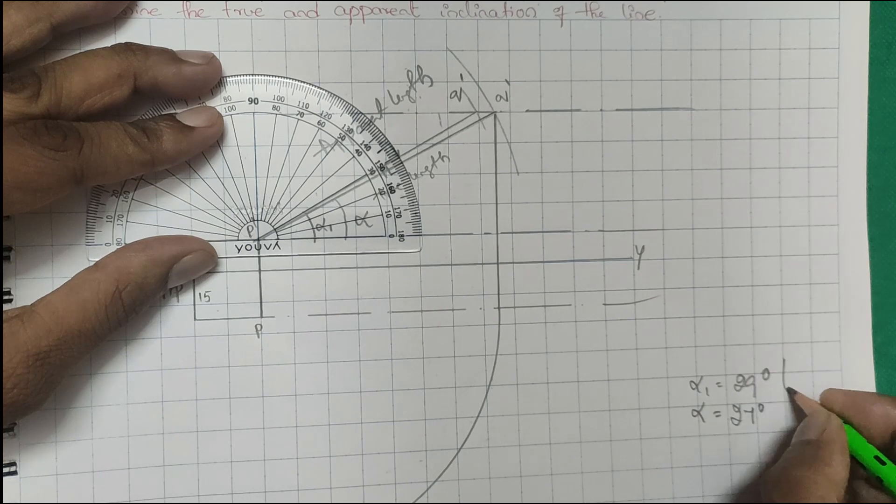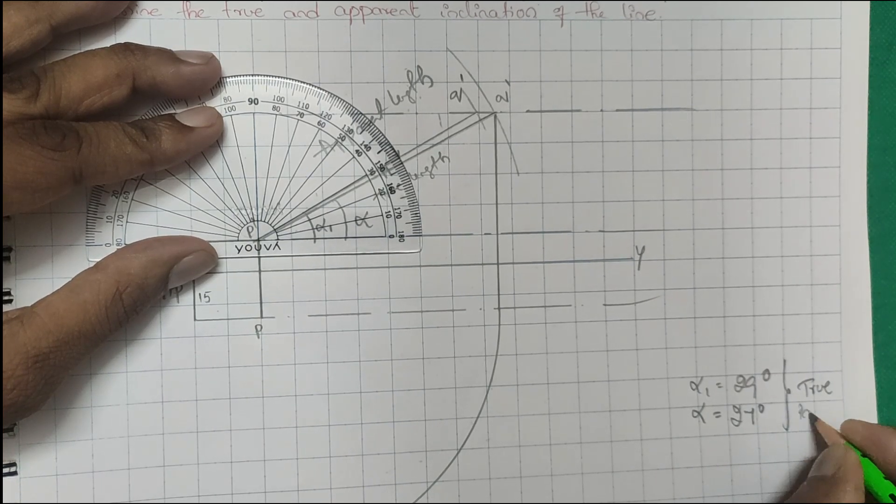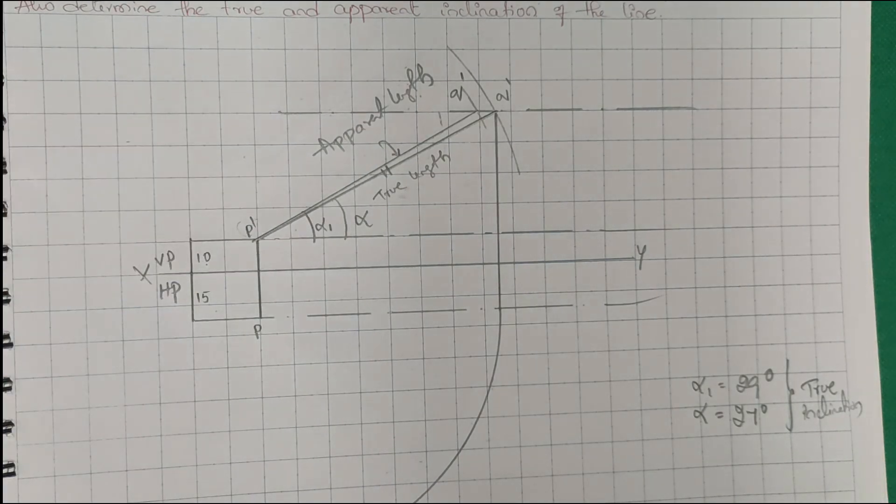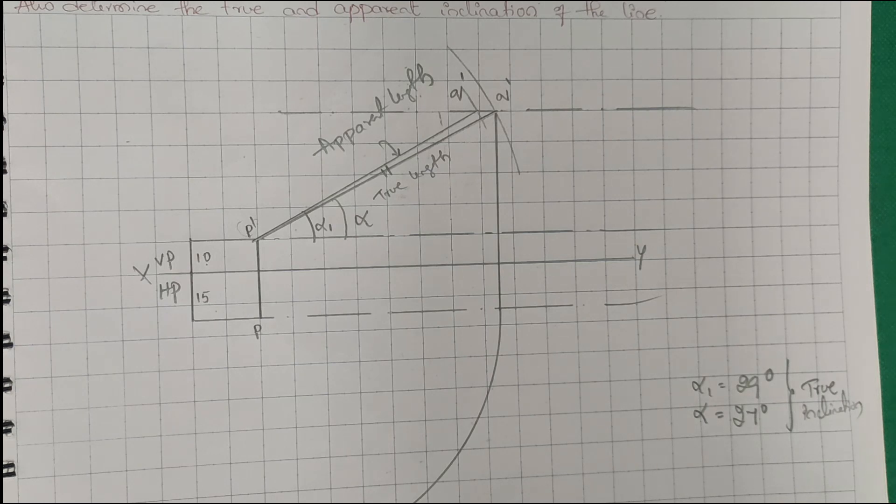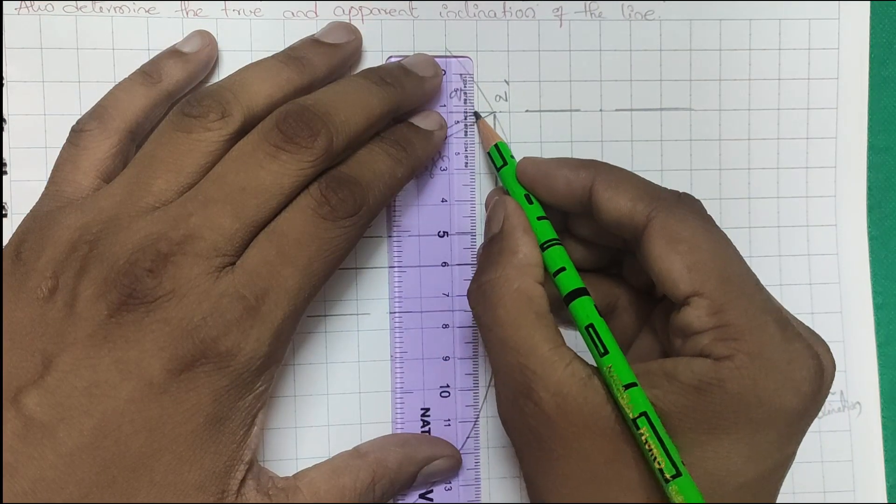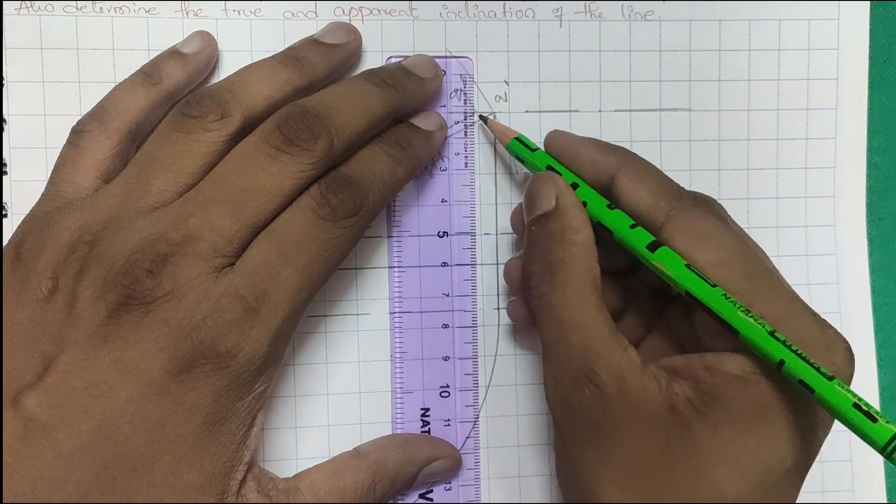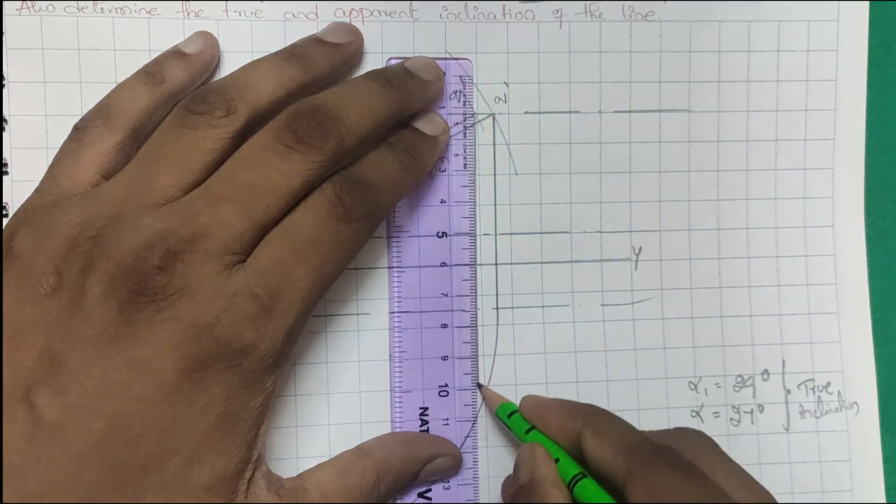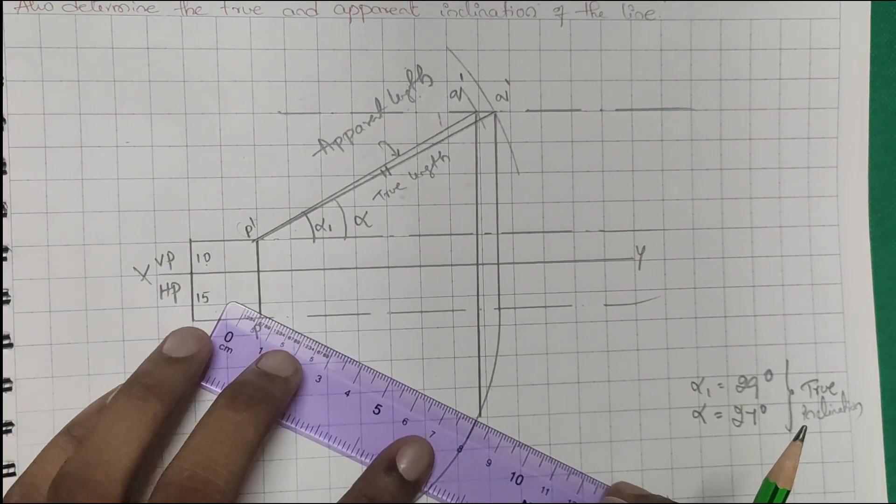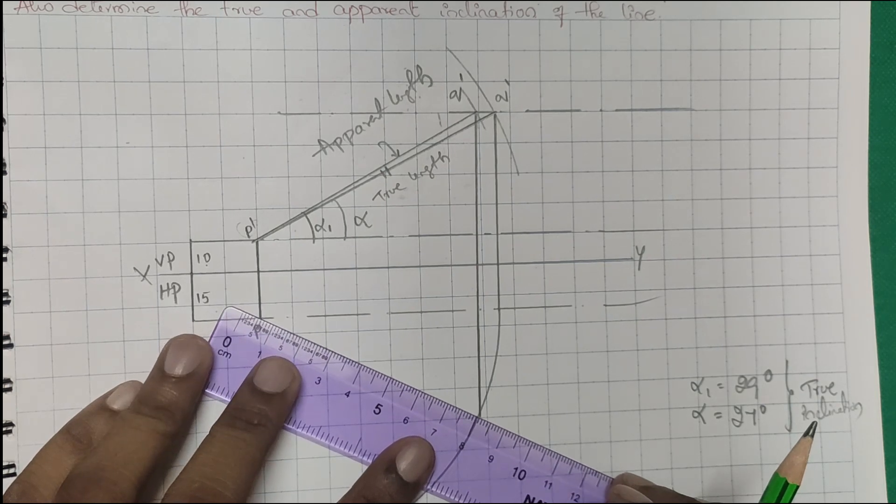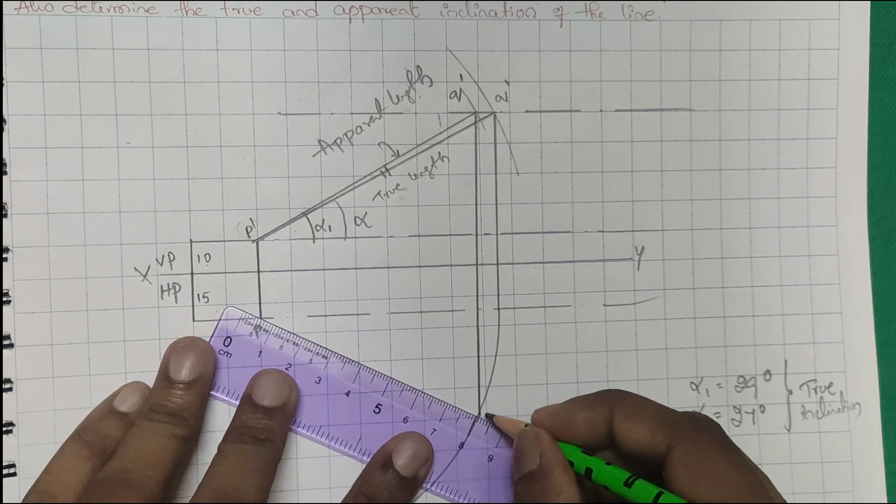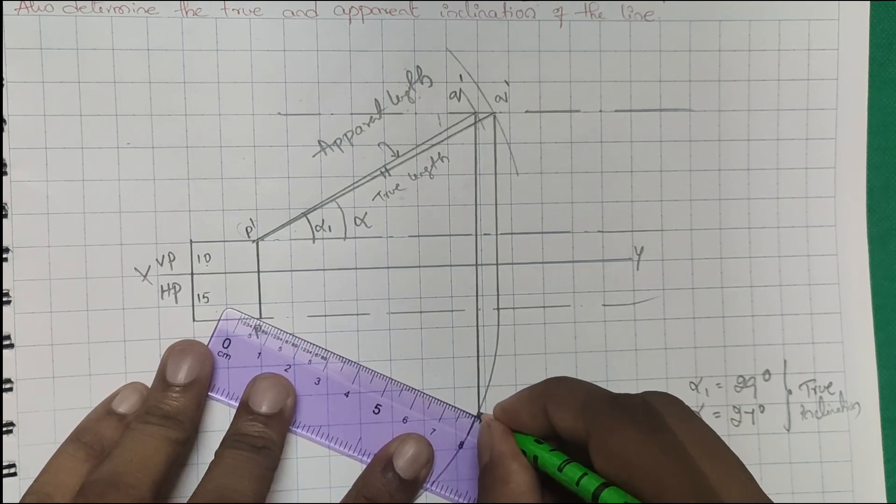These are the true inclinations. Now I want you to find out the apparent inclinations. It's a very simple task. I will draw a straight line from here which intersects here, then join this.